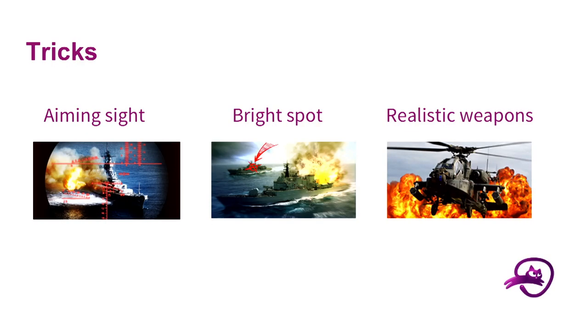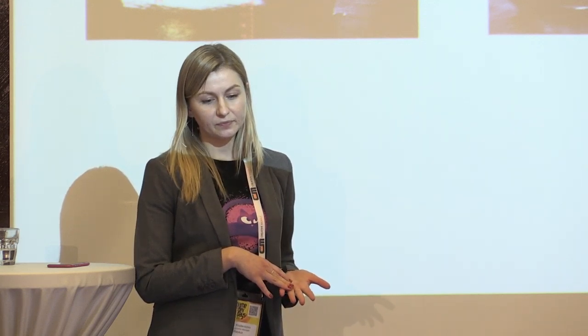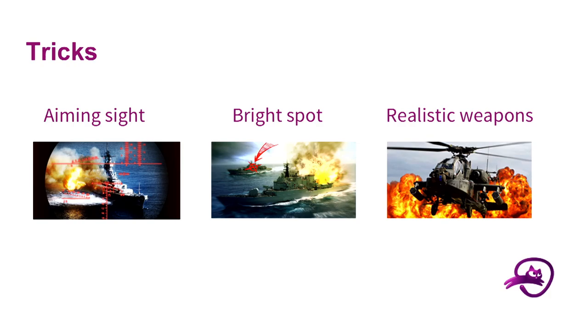I would like to share some tricks we use for Tropic Storm that work in terms of creatives. The first is an aiming sight — any object used as an aiming sight looks and works much better in terms of CTRs. Another is a bright spot: if you have a boring composition, you can add little elements like arrows or circles to claim more attention from the user. The last trick is to use realistic weapons — tanks, warships, helicopters — and these work much, much better than assets from the game itself.